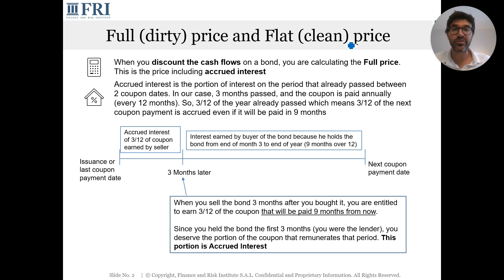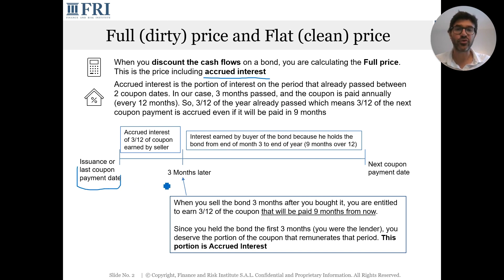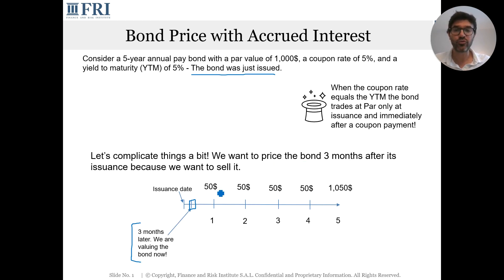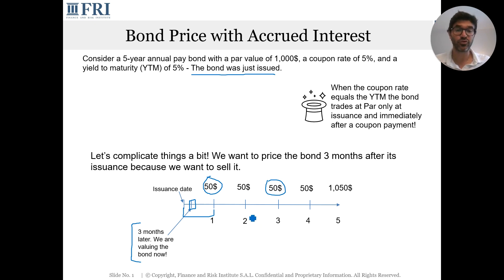The full price includes something called accrued interest. Accrued interest is the portion of interest for the period that already passed between two coupon dates. Consider the first coupon: when the issuer pays $50, they are compensating the bondholder for lending money for one full year from issuance to end of year one. Similarly, the year-three coupon compensates the bondholder for holding the bond from end of year two to end of year three.